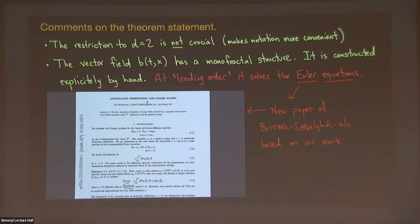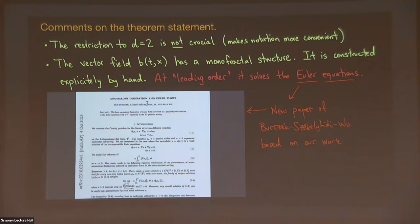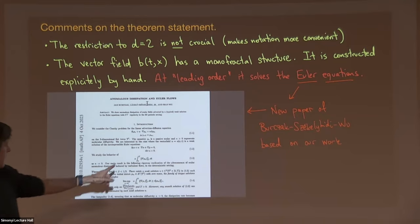There's subsequent work on the arXiv about two months ago by Burzak, Chiklahidi, and Woo. They reran our construction and used the observation that we have a lot of freedom in how we make the vector field. If you perturb the construction a little bit it doesn't change the anomalous diffusion proof, so you can do a preprocessing step using convex integration on our vector field construction and make it solve the Navier-Stokes equation — our solution already almost solved it at leading order, so they convex integrate that away.